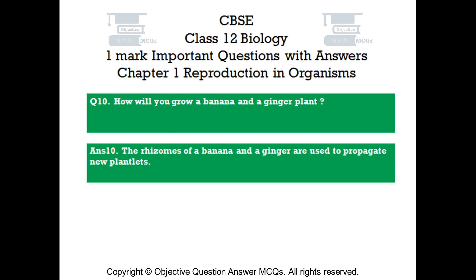Question number 10: How will you grow a banana and a ginger plant? Answer number 10: The rhizomes of banana and ginger are used to propagate new plantlets.